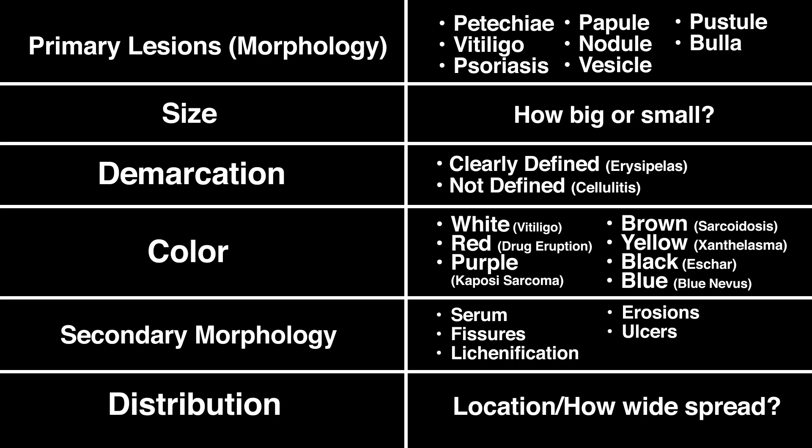That was a lot of information, so let's quickly review the important parts. Whenever you are attempting to describe a skin problem, remember: primary lesion morphology, size, demarcation, color, secondary morphology, and distribution. What you'll need for a skin examination is a well-lit room, a ruler, a magnifying glass, a hand-held source of light, and an open and curious mind.